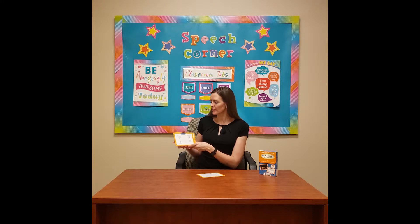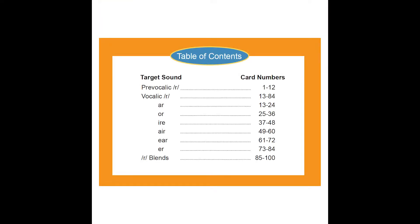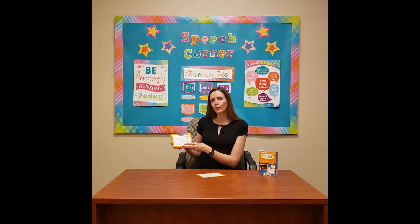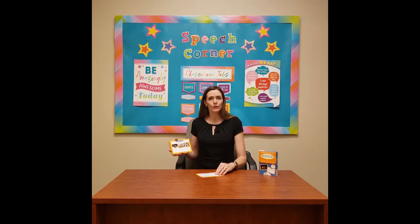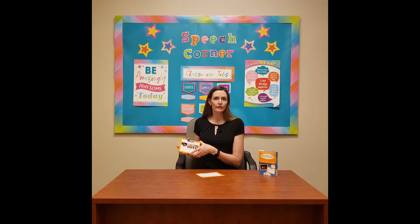What is contained in this deck is Pre-Vocalic R, Vocalic R, Vocalic OR, IR, AIR, EAR, ER, and the R blends. You're getting 12 cards per vocalic subset and the Pre-Vocalic and the blends, so that's a lot of activities for your students that are working on advanced articulation practice with their R.